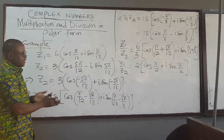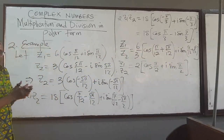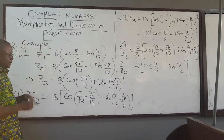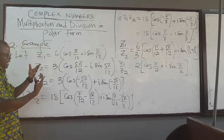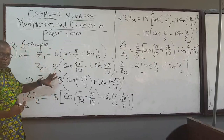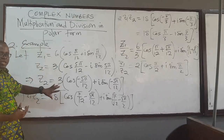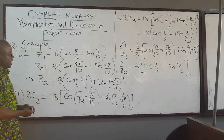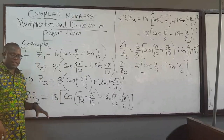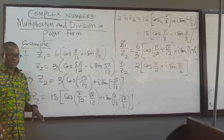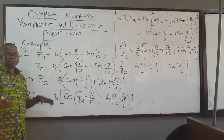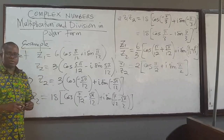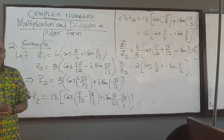So these are two examples of how you multiply and divide complex numbers in polar form. If you're given a more complex problem, you can often just break it down into these two operations and find your solution. I'll see you in the next lecture where we talk more about complex numbers.